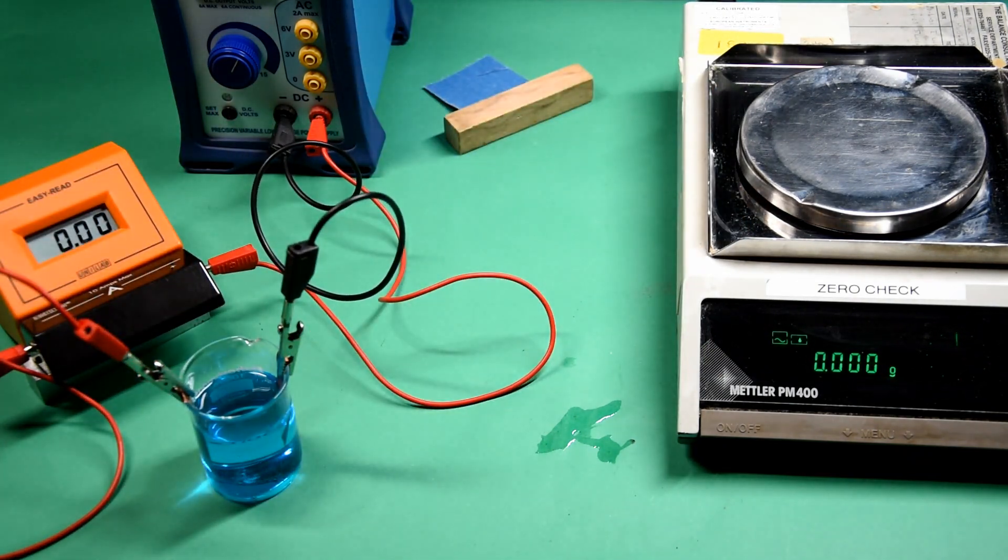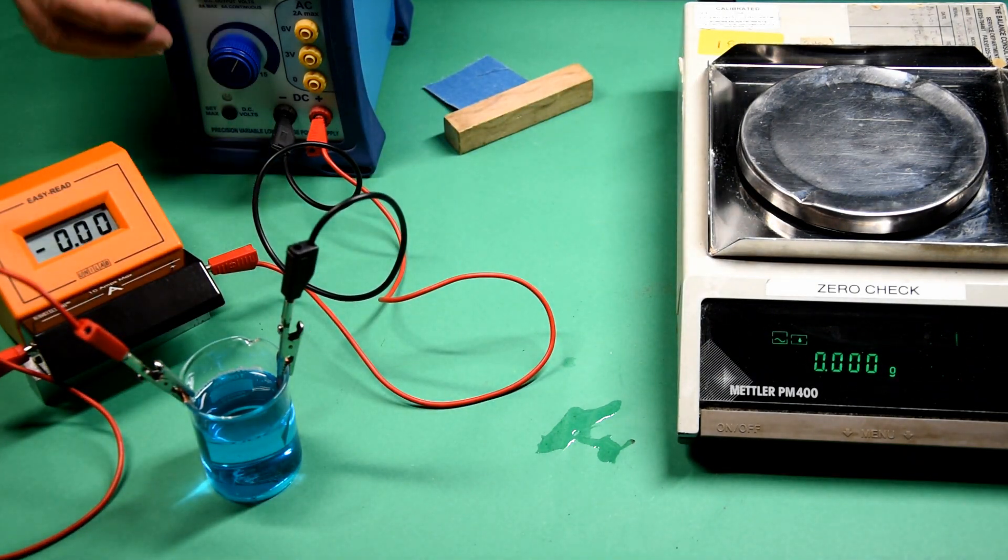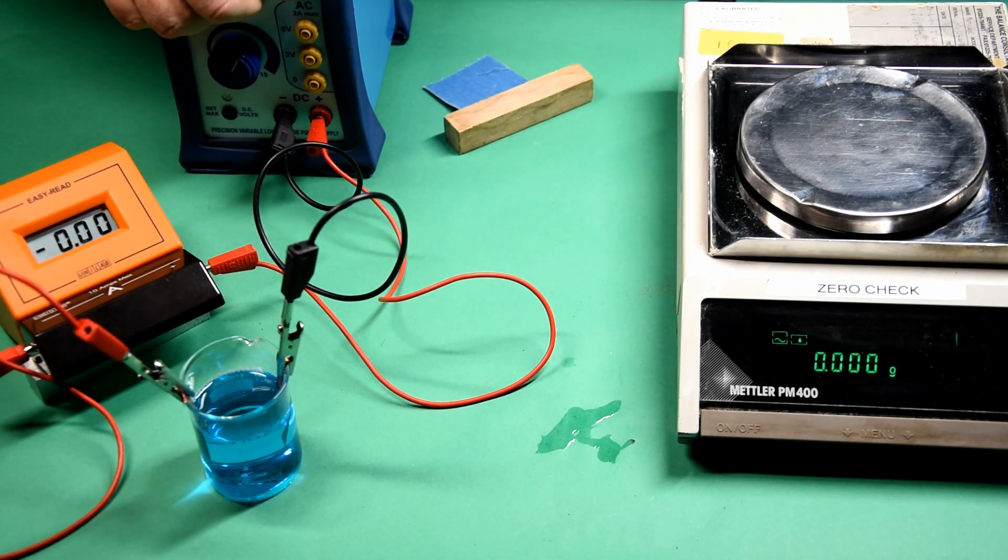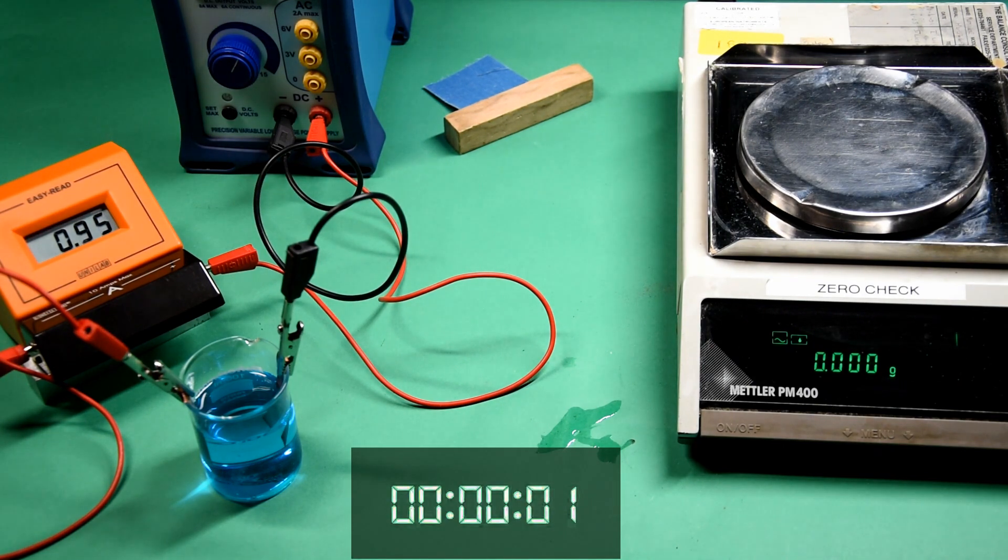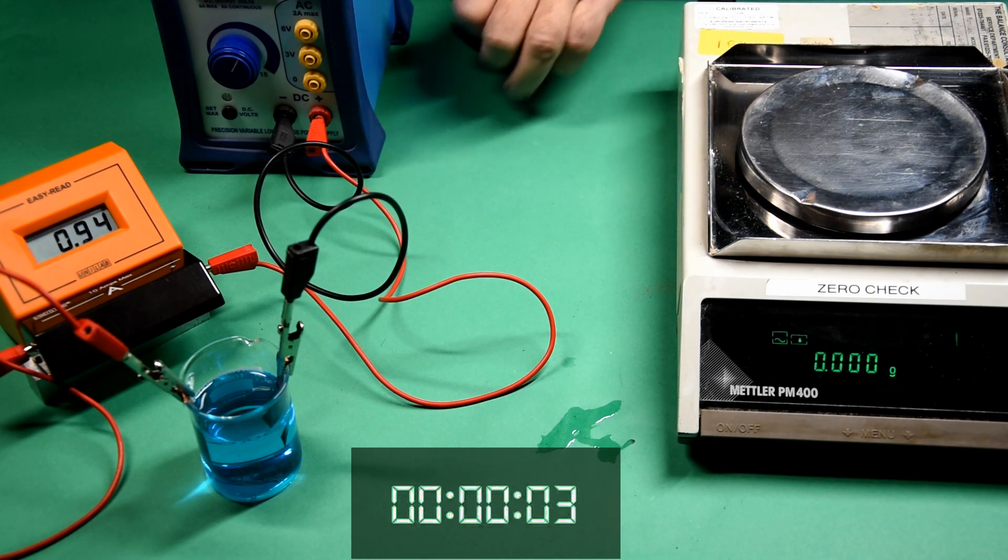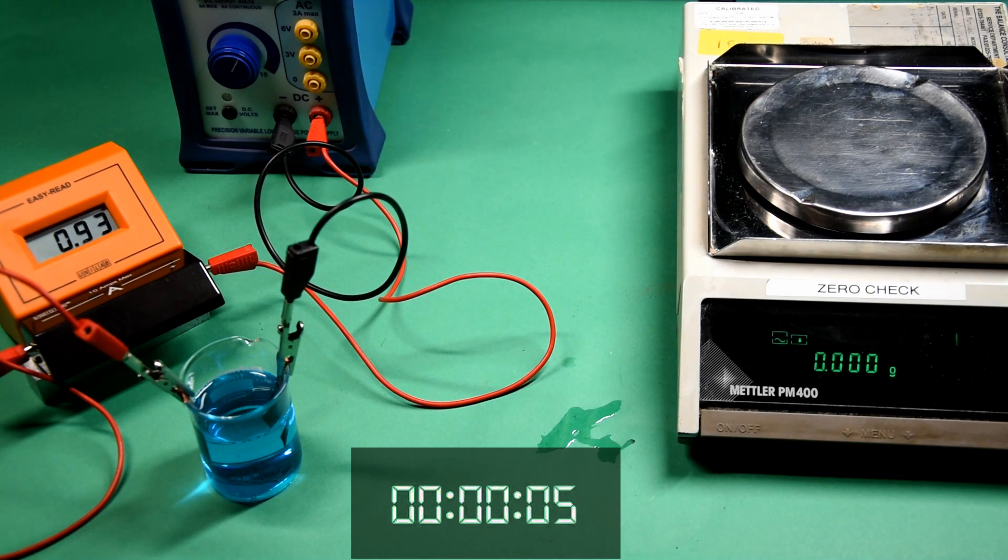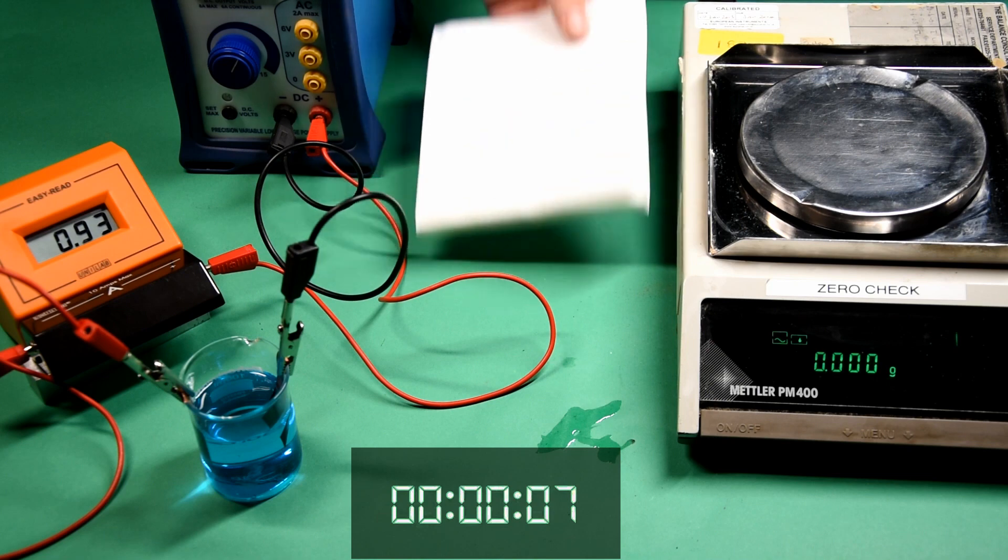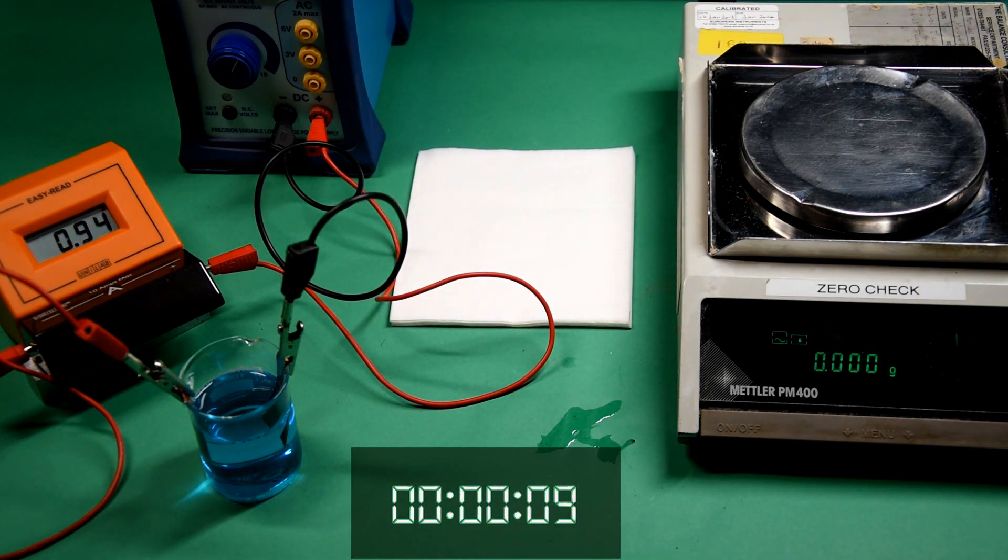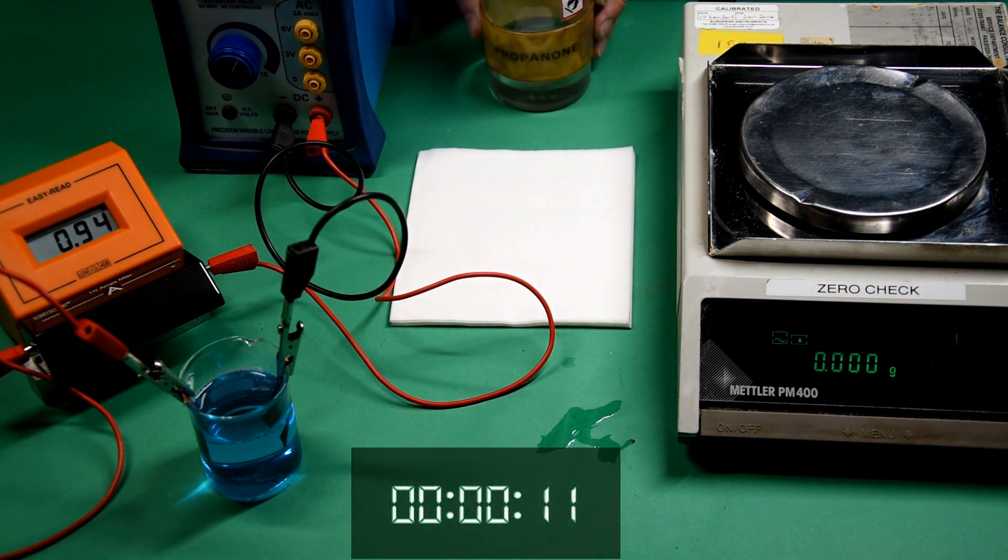The circuit is complete and the power can be turned on. We're making a note of the time and the current because we could use this to calculate the number of electrons flowing and the theoretical mass of copper deposited.